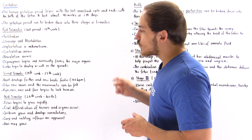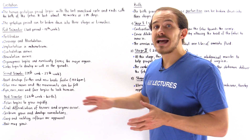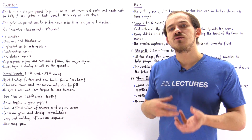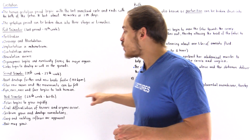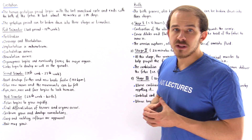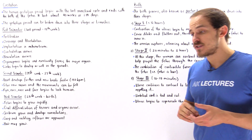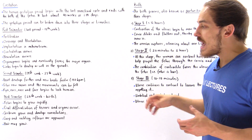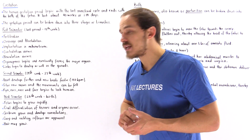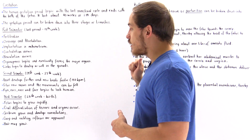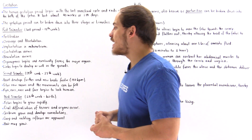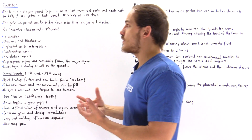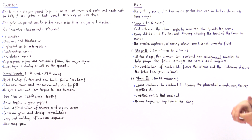The third trimester begins at week 28 and ends at birth. This is when the fetus grows very rapidly and increases significantly in size. Final differentiation of all the organs takes place. For example, the cerebrum begins to fully differentiate and develops the convolutions we see on the brain. Different reflexes also become apparent — such as grasping and suckling — and this is when the fetus begins to suck its thumb. Hair may or may not grow during this period.